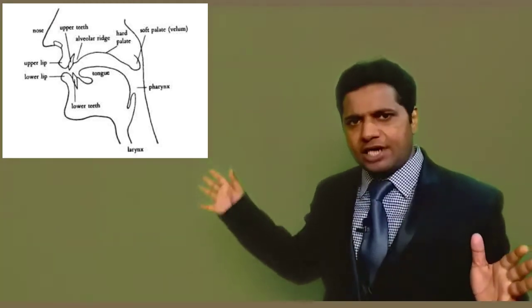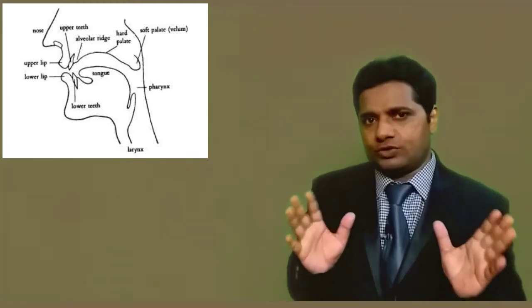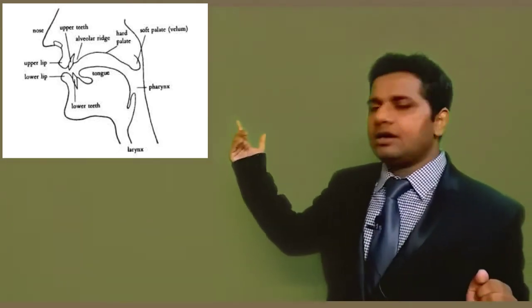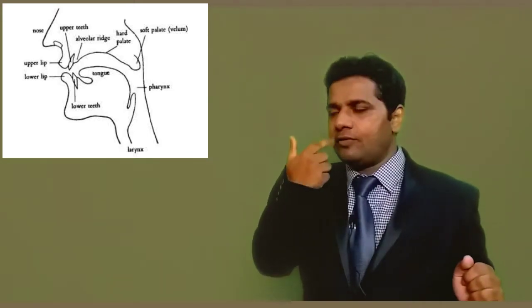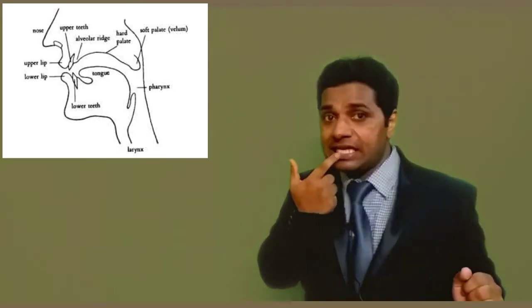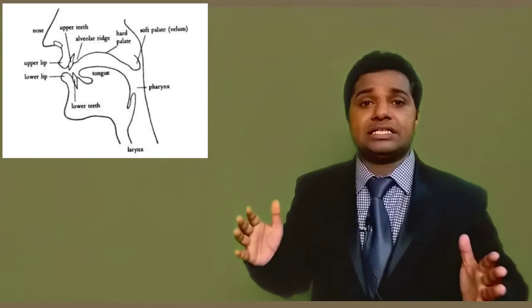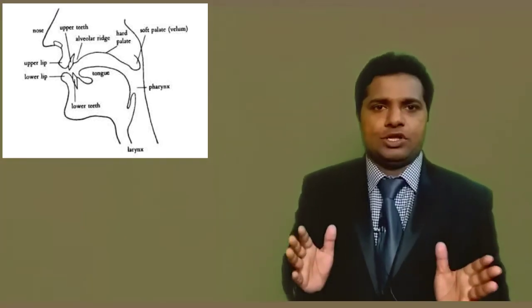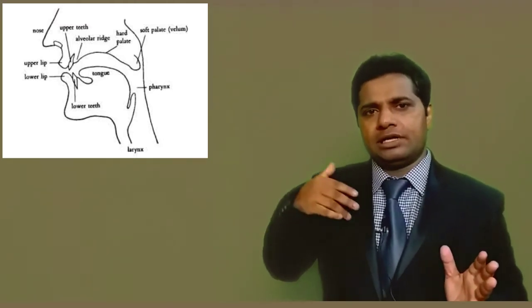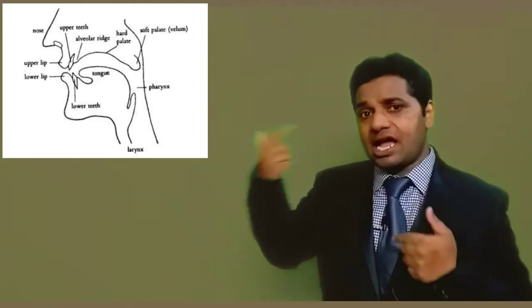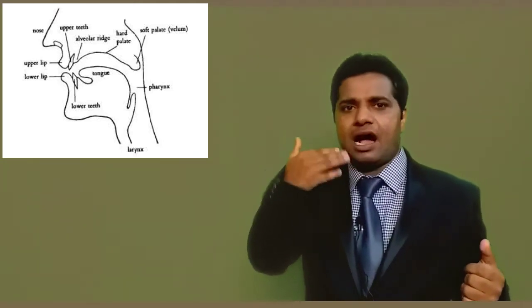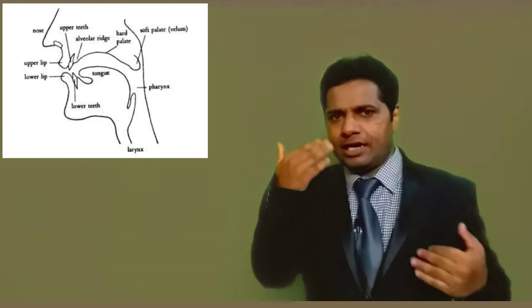So if you see this structure, what do we have? We have here nasal cavity, we've got oral cavity, and these two cavities are very important to decide manner of articulation—what kind of sound is that. This is going to decide. Then you've got teeth: upper teeth, lower teeth, set of teeth.